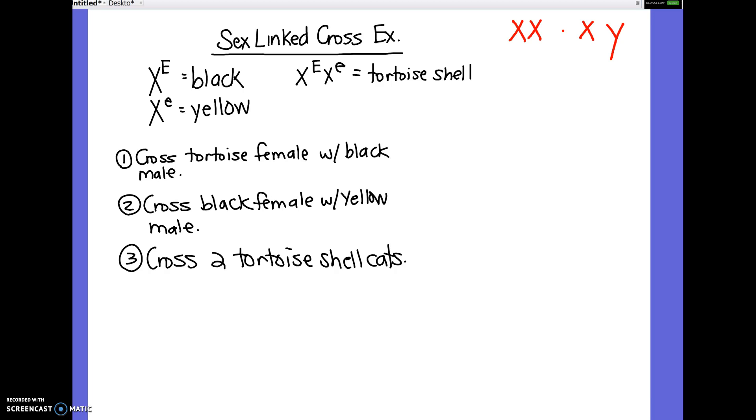And then we note the trait as a superscript on the X chromosome. So for example, a female could be X big E, X little E for a trait. But a male could either be X big E or X little E. He couldn't be heterozygous. You can't have a male that's heterozygous because a male only has one X.